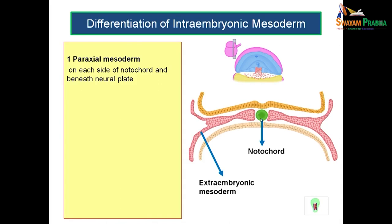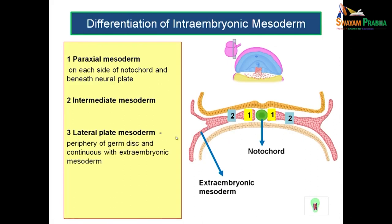The paraxial mesoderm lies under the neural plate as well. Next, you have the intermediate mesoderm. The paraxial lies on either side of the notochord, the intermediate mesoderm lies next to it, and lateral to that you have the lateral plate mesoderm — the periphery of the germ disc — which is continuous with the extraembryonic mesoderm lying outside the embryo proper.